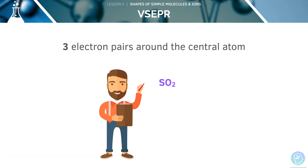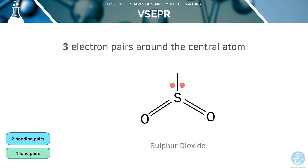Now, let's look at another compound with three electron pairs around the central atom, such as SO2. Sulfur has six outer electrons and is forming two double bonds, meaning it has one lone pair and two bonding pairs. There are two double bonds and one lone pair, which will try to get as far apart as possible, taking up this trigonal planar arrangement. Because the lone pair isn't counted when you describe the shape, SO2 is described as non-linear.